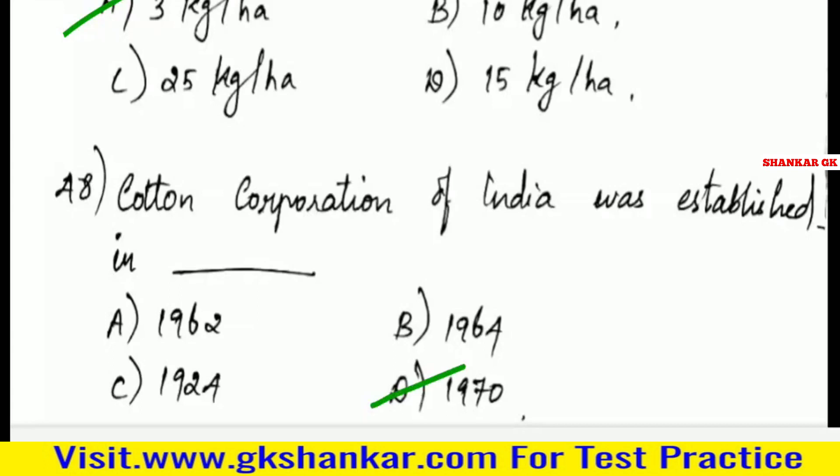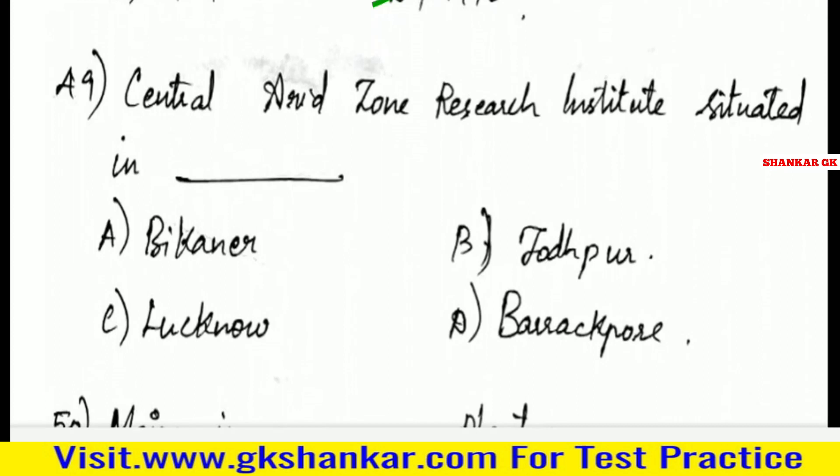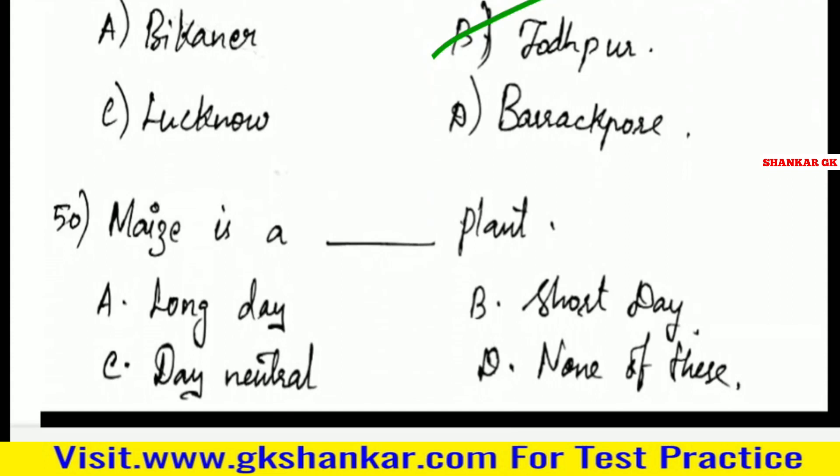Forty-ninth question: Central Arid Zone Research Institute is situated in — A. Bikaner, B. Jodhpur, C. Lucknow, D. Barrackpur. Answer: B. Jodhpur.